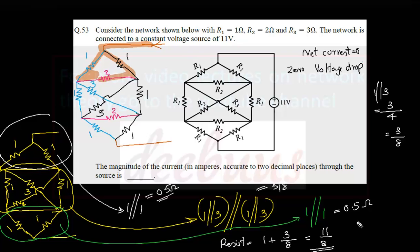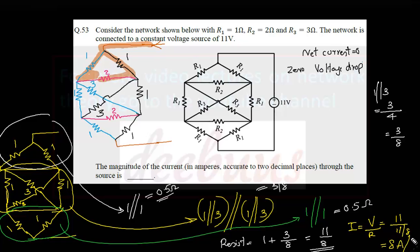We calculate the current: I = V / R = 11 divided by (11/8) = 8 ampere. So the answer is 8 ampere.